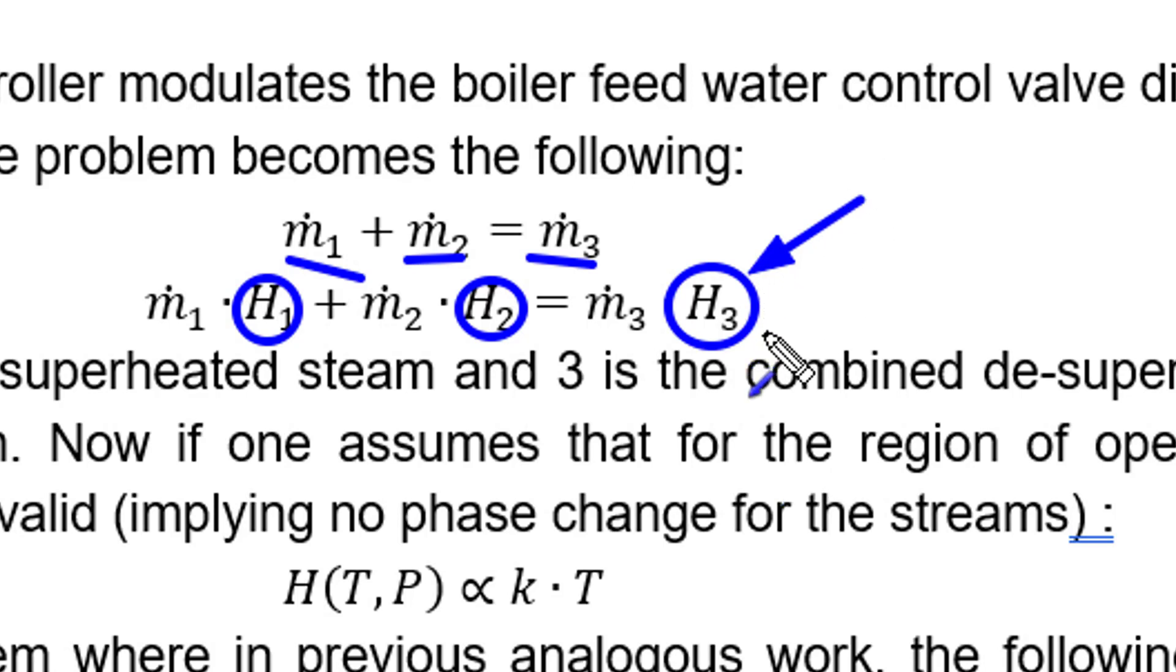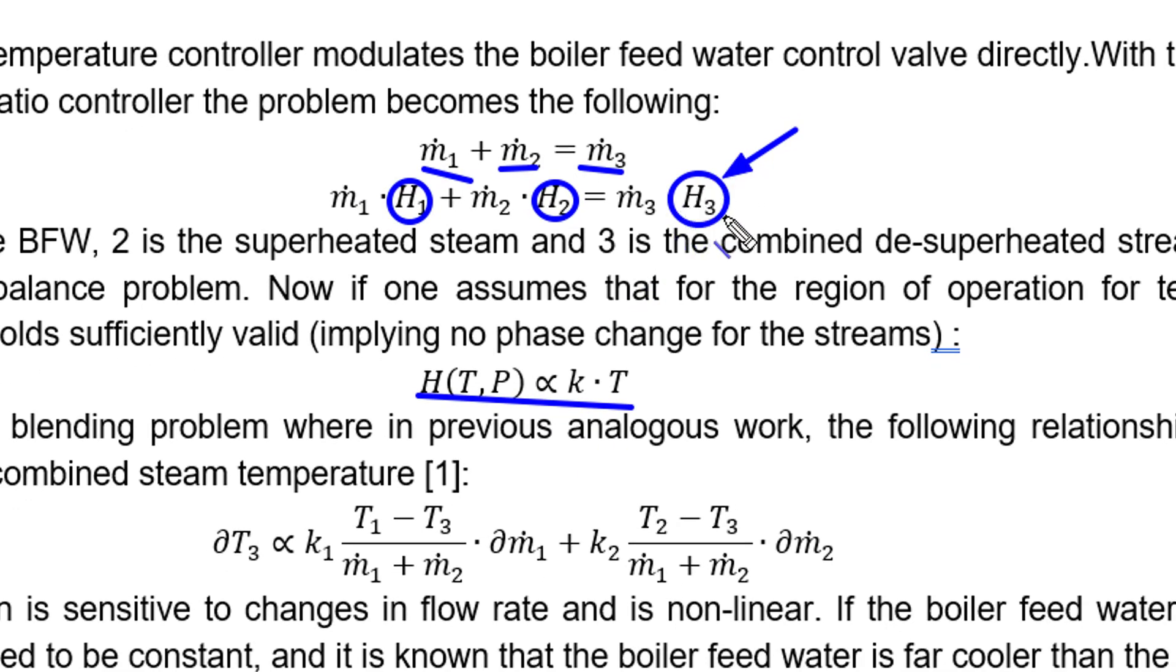If you plot the enthalpy of steam around the typical operating region, you'll find that enthalpy as a function of temperature and pressure is mostly linear. It's actually a quadratic but fairly linear to temperature. We make this assumption and replace every enthalpy with k·T. We change the subject of the equation because we're trying to control temperature, which is linked to quality.